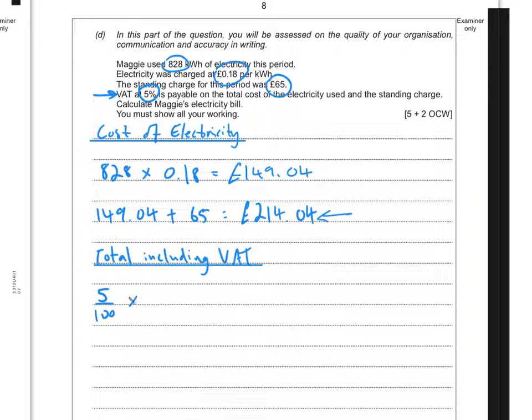If I find 5% first of all, that's 5% of £214.04, or 0.05 times £214.04, which gives me £10.702. But money's always to two decimal places, so we'll say that's going to be £10.70.